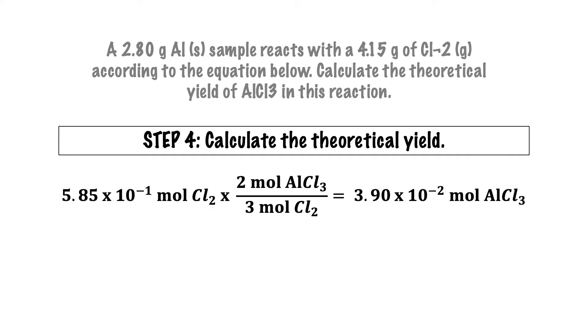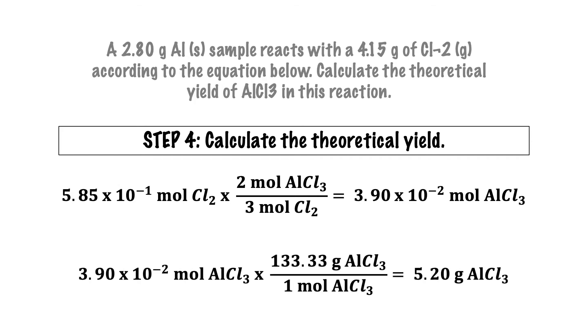Since a theoretical yield is typically reported with units of mass, let's use the molar mass of aluminum chloride to convert from its moles to grams. Finally, our calculations show that the theoretical yield of the reaction is equal to 5.20 grams of aluminum chloride.